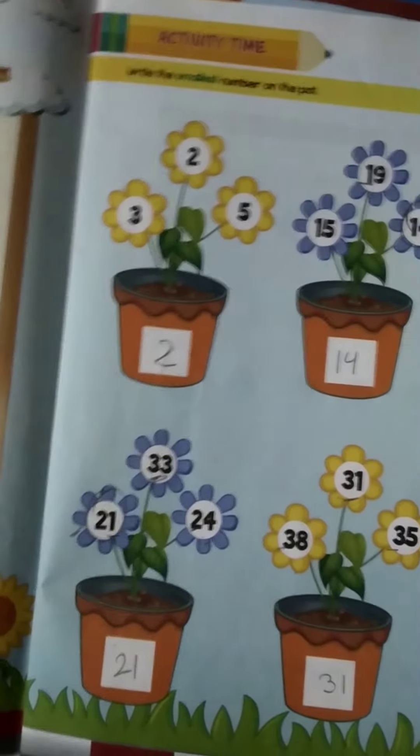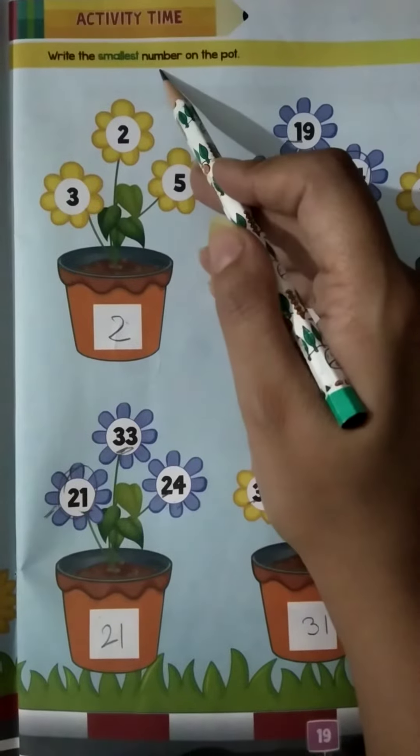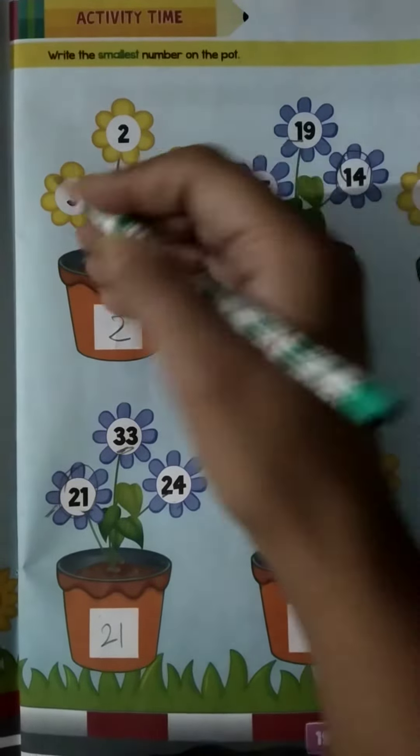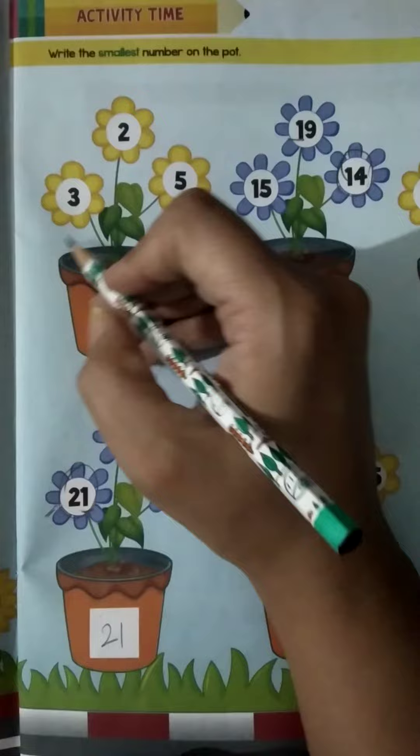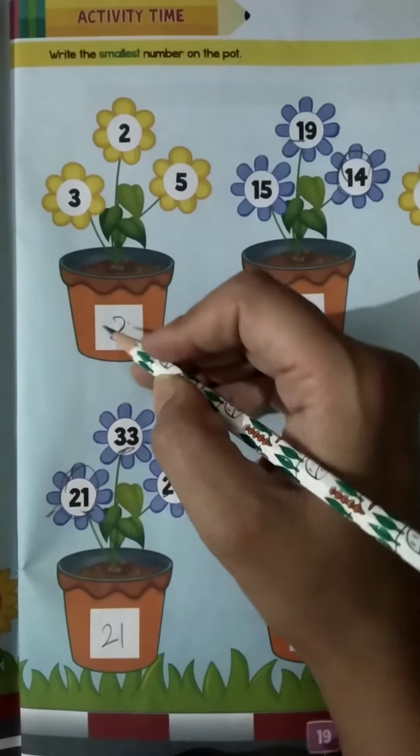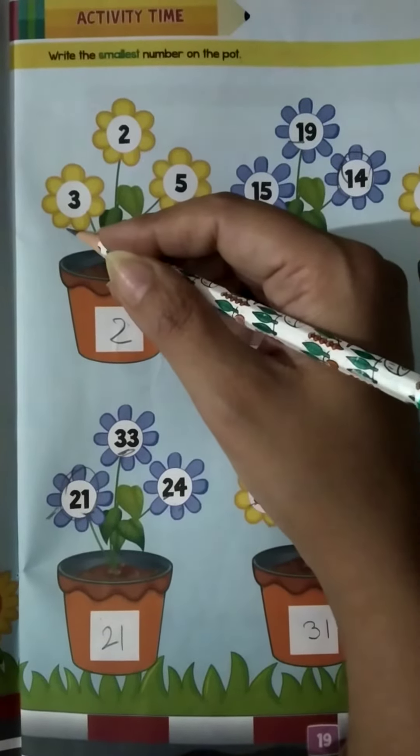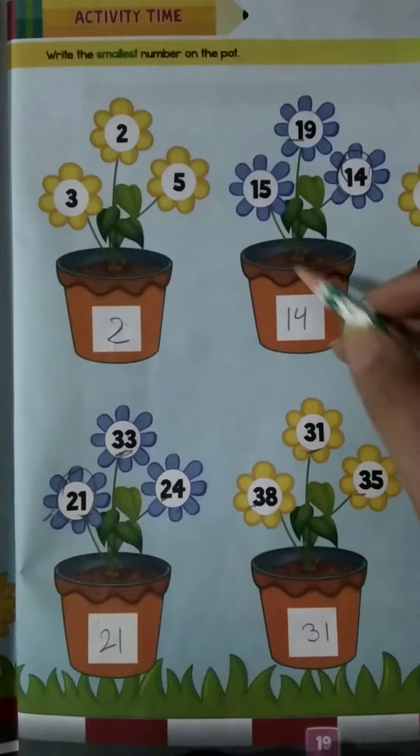Now on the next page. Write the smallest number on the port. Now, dhekho yeh port hai. Ispere flowers hai. 3, 2, 5. Ab sabse small kounsa hai? 2. Dhekho 2 small hai. 2 se bada koun hai? 3. 3 se bada koun, 4, then 5. Chik hai?